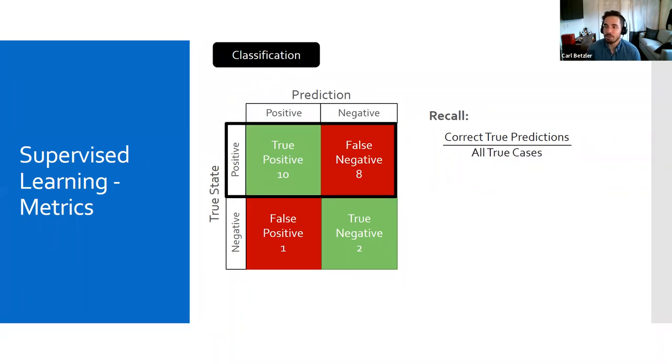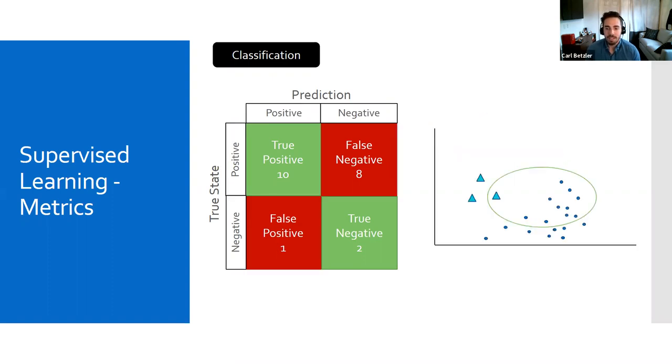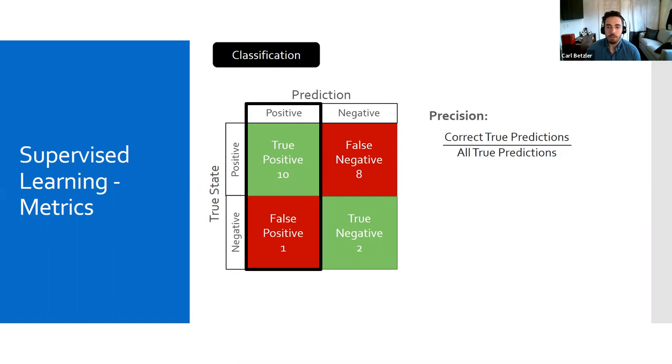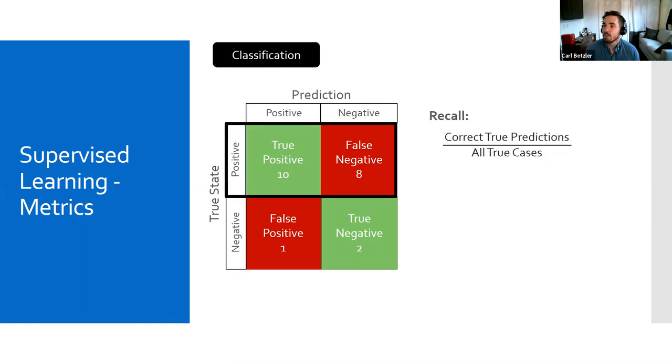Recall is a little bit different. With recall, we're looking at the quantity of predictions. It's defined as the number of correct true predictions over all true cases. In this case, again, going back a couple slides, you can see it is, though it is very precise, it is only predicting 10 out of 18, so 56%, which is not as good.